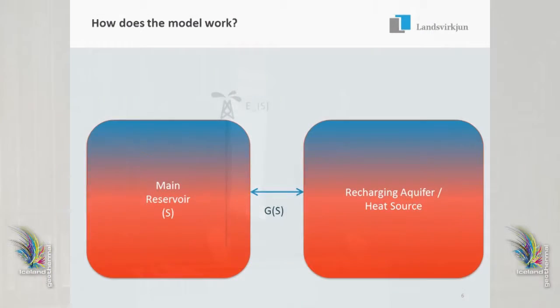These two entities — the aquifer and the heat source — are recharging energy into the main reservoir. When we come to an untouched geothermal reservoir, there's a balance between these two, so there's no net recharge into the geothermal reservoir. But as you produce from it — you put in a well and produce from it — you change this balance and see more recharge from the heat source and the aquifer into the main reservoir. Your well will start producing at some high rate, but then it will decline slowly, and you come to a balance where the additional extraction from the well equals the recharge into the reservoir.